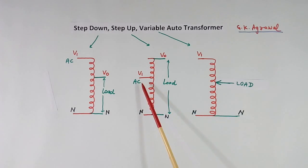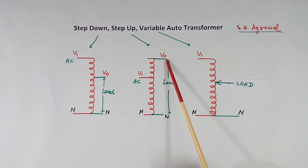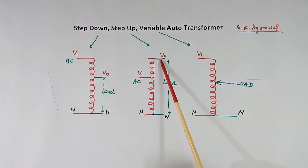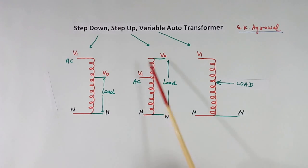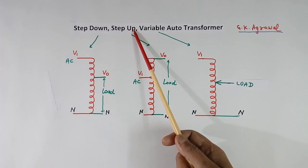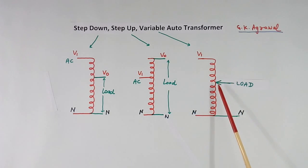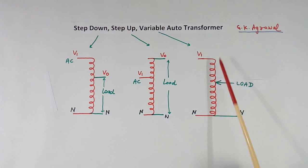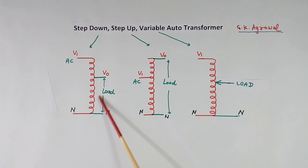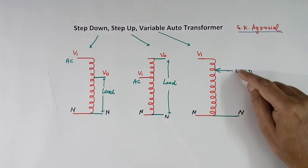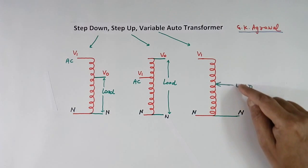In the step up case, input voltage is connected here and the load side connection is here. Load side turns are more, so voltage will be more — so it is called the step up transformer. In case of a variable transformer, the output tap can be changed. Here it is fixed, but in the variable type you can vary it anywhere.